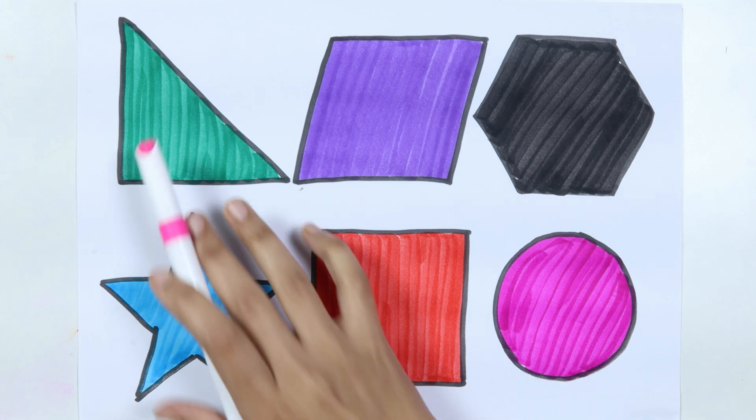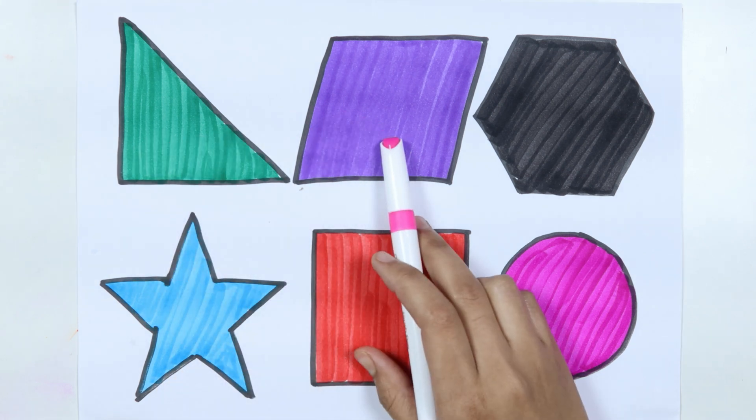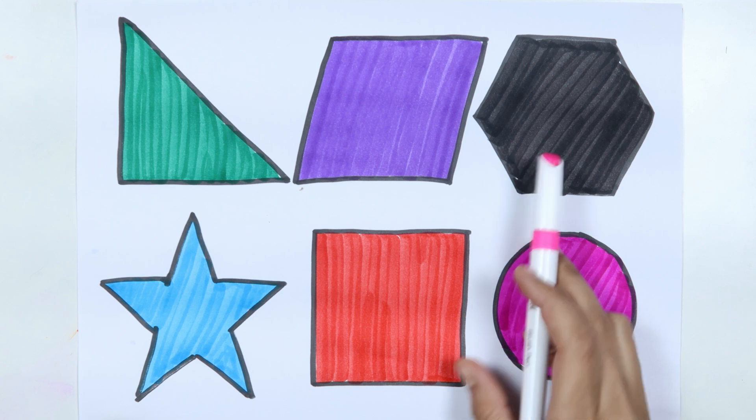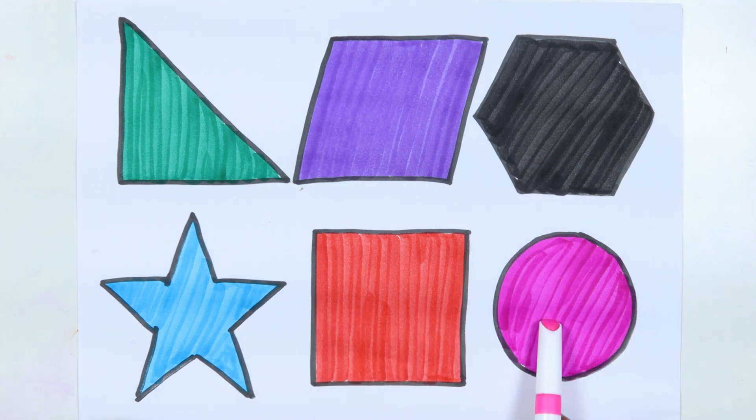Circle. Right triangle. Parallelogram. Hexagon. Star. Square. Circle.